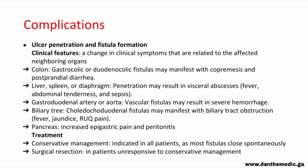Treatment for perforation includes NPO, volume resuscitation, supportive care, and Graham patch surgery — a surgical repair of a small perforated duodenal ulcer using a piece of omentum to close the perforation. Another complication is penetration and fistula formation. Clinical features depend on the neighboring organ involved: fistula with the colon may cause copremesis and postprandial diarrhea; fistula with liver, spleen, or diaphragm may cause visceral abscess with fever, abdominal tenderness, and sepsis; fistula with the gastroduodenal artery or aorta results in severe hemorrhage; fistula with biliary tree causes biliary obstruction with fever and right upper quadrant pain; fistula with the pancreas causes epigastric pain and peritonitis. Treatment consists of conservative management and surgical resection.